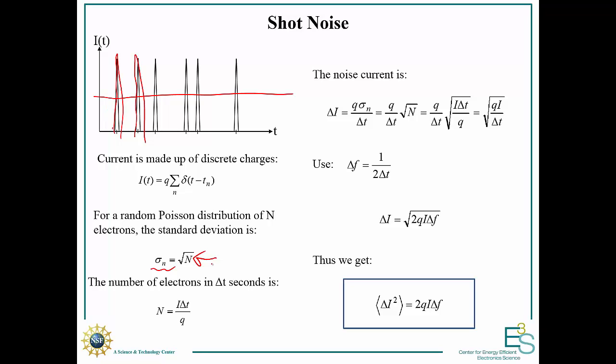We can find the standard deviation in the current. The number of electrons in a given amount of time will be the current times the time divided by the charge. If we plug this in and say that our change in current is q times the standard deviation over delta t, we find that the noise current or the variation in current is proportional to the square root of the charge times the current divided by delta t.